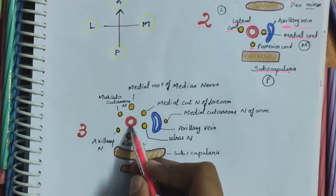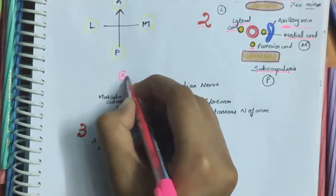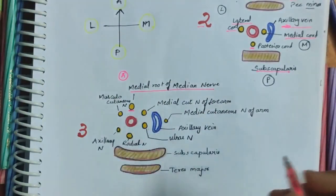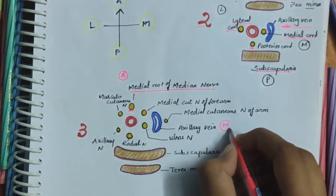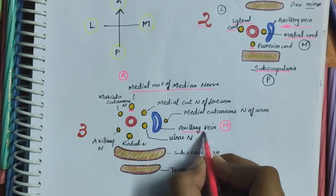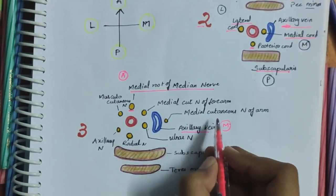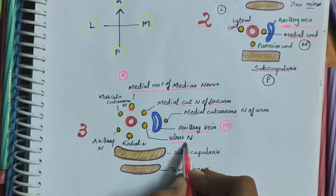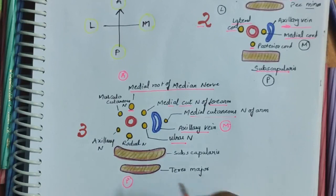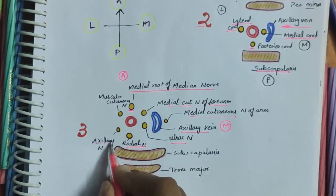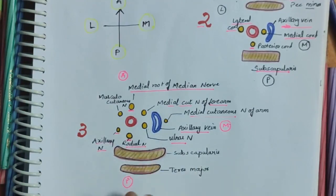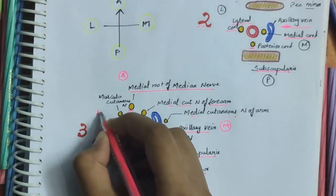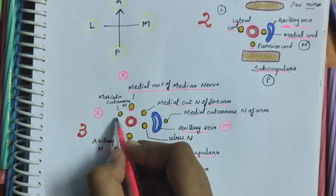Relations of the third part of the axillary artery: anteriorly, it is related to the medial root of the median nerve. Medially, it is related to the axillary vein, the medial cutaneous nerve of the forearm, the medial cutaneous nerve of the arm, and the ulnar nerve. Posteriorly, it is related to the radial nerve, the axillary nerve, the teres major muscle, and the subscapularis muscle. Laterally, it is related to the musculocutaneous nerve.